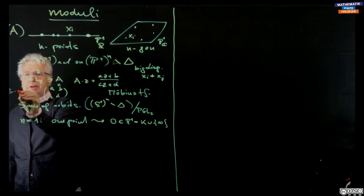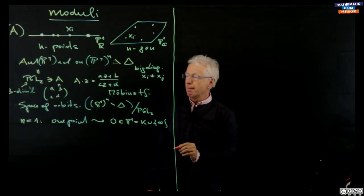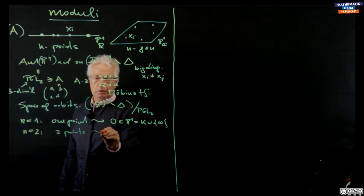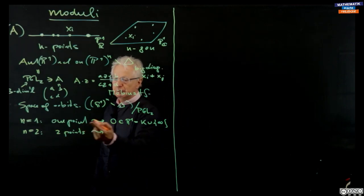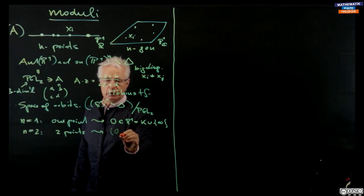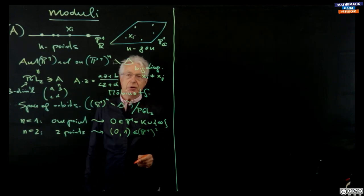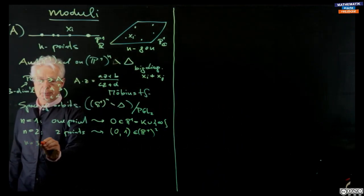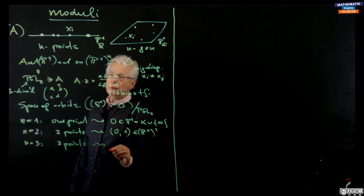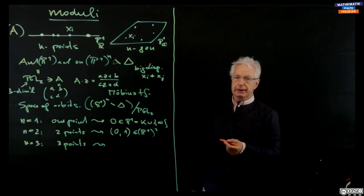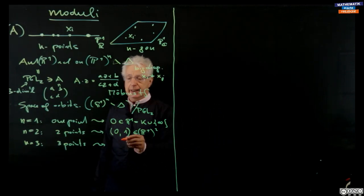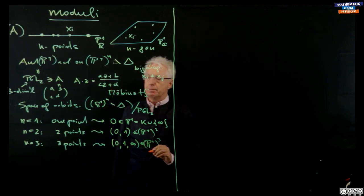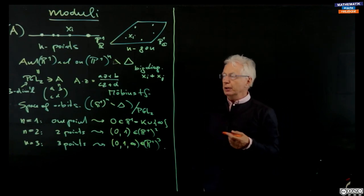PGL2 is three-dimensional — think over the complex numbers or over the real numbers. For n equals 2, two distinct points: we can move the pair to 0, 1 in P1, and that's a nice representative of the orbits, so again we just get one point as the space of orbits. For n equals 3, the same story. It's easy to see that PGL2 acts three-transitively on P1, so we get a normal form 0, 1, infinity, and each time we just get a point as our moduli space.